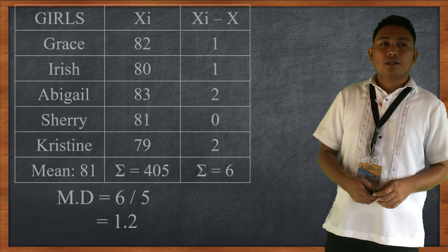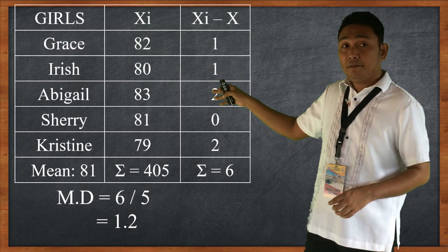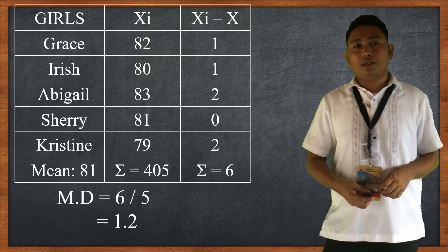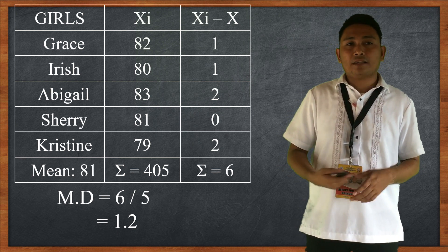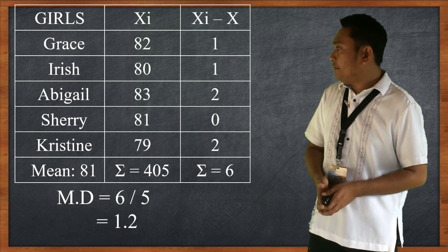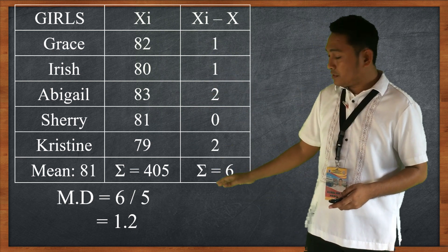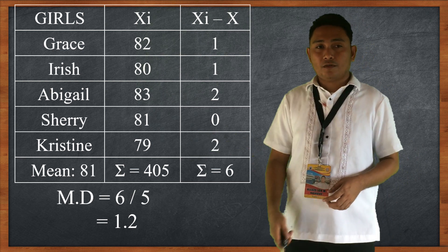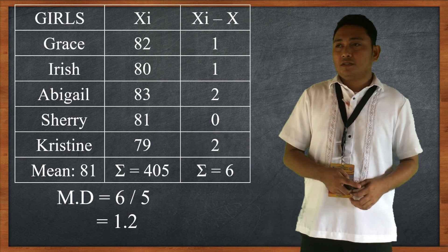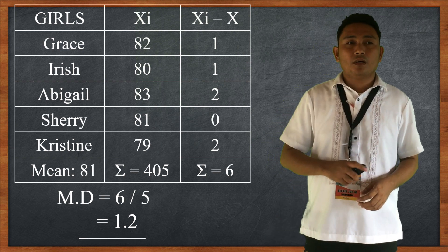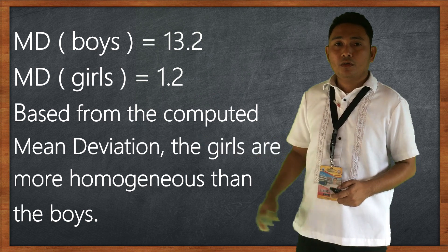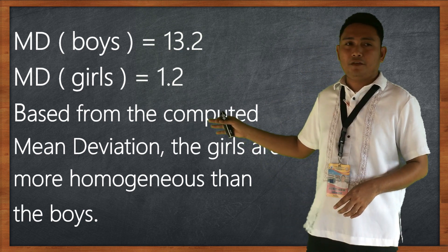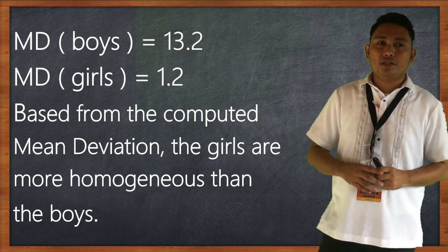For the girls: Grace has 82, Irish has 80, Abigail has 83, Sherry has 81, and Christine has 71. The mean is also 81. The summation of absolute deviations is 6, and the total number of scores is 5. So 6 divided by 5 equals 1.2. The mean deviation for the boys is 13.2, and for the girls it is 1.2. Based on the computed mean deviation, the girls are more homogenous than the boys.